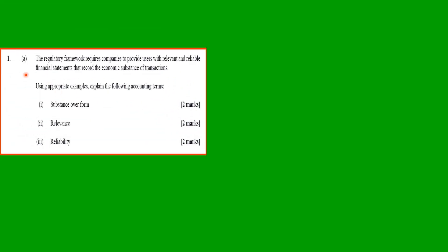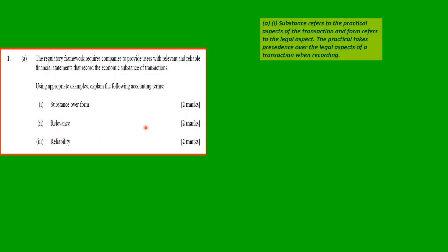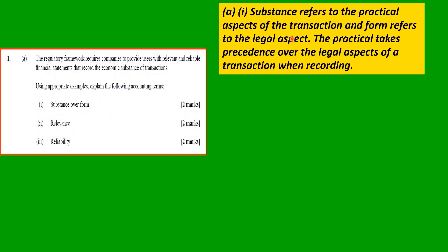Part E: The regulatory framework requires companies to provide users with relevant and reliable financial statements that record the economic substance of transactions. Using appropriate examples, explain the following accounting terms: substance over form, relevance, and reliability. We start with substance over form.